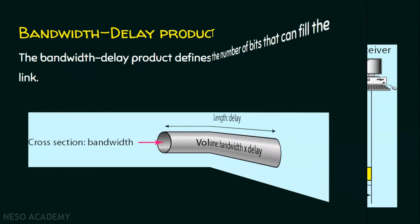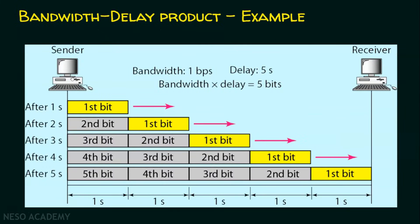We will see an example. In this example, there is a sender and there is a receiver. The bandwidth is one bit per second, meaning in one second only one bit can be sent, and the delay here is five seconds. So the bandwidth delay product is one bit per second multiplied by five seconds, which equals five bits. After five seconds, we can see there are five bits on the link.